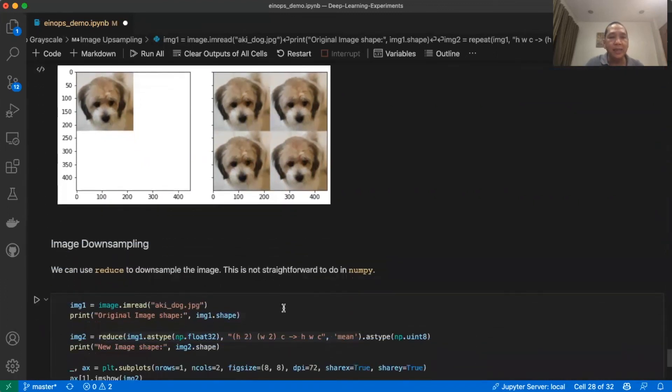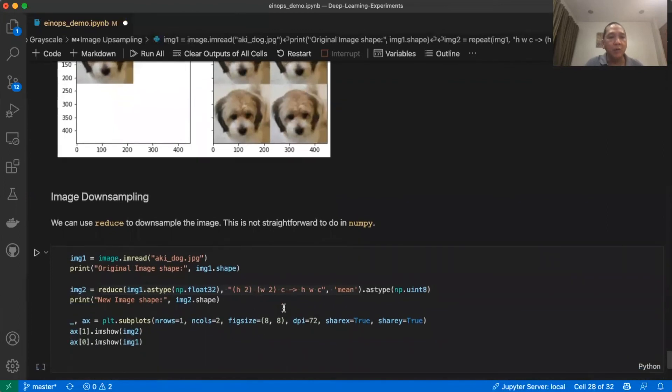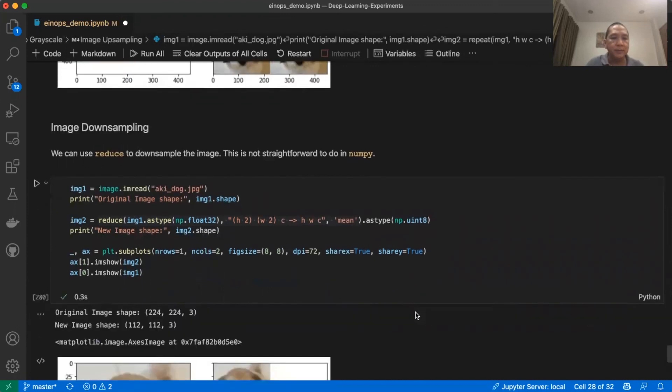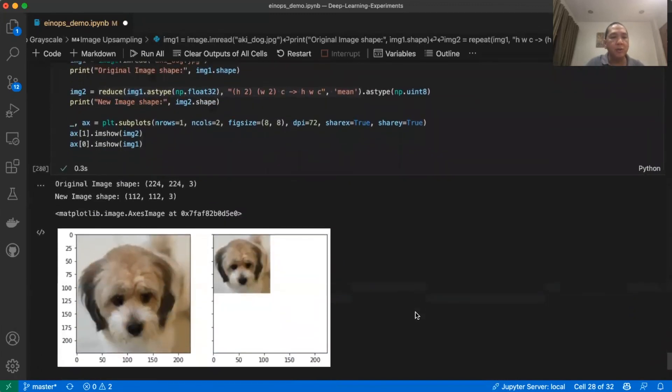The last example is image downsampling. We can reduce the image size by calling the EinOps reduce. This is not straightforward to do in NumPy. And this is the result of image downsizing.